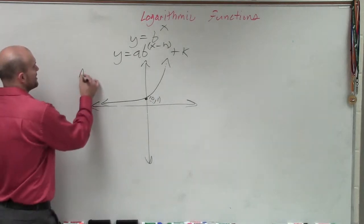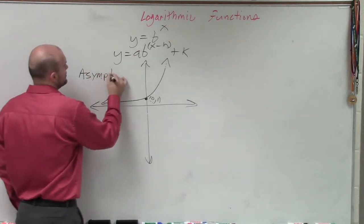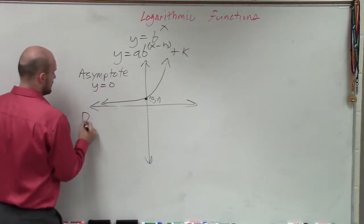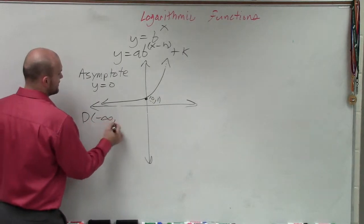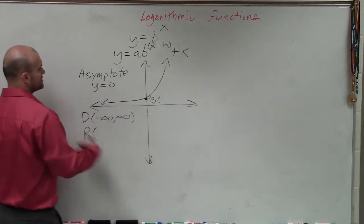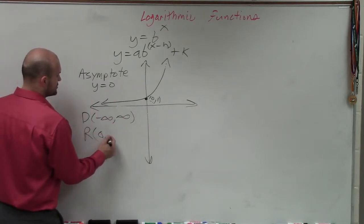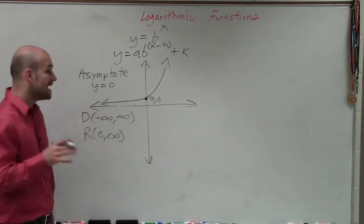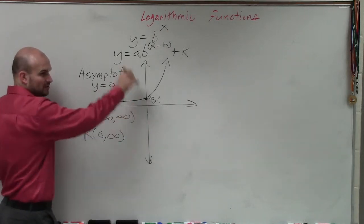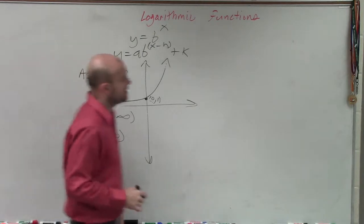The other thing I wanted to remind you of is the asymptote is going to be at y equals 0. The domain was from negative infinity to infinity, and the range is from 0 to infinity. It's not all real numbers because the asymptote was at y equals 0, so we don't have any negative numbers for the y.